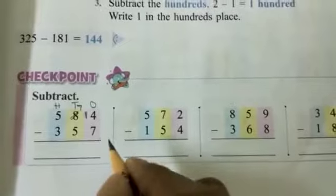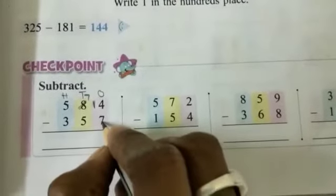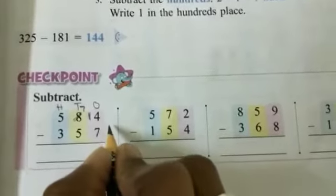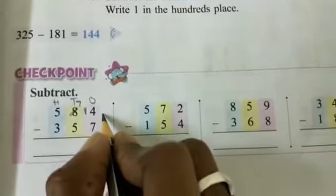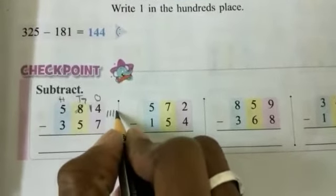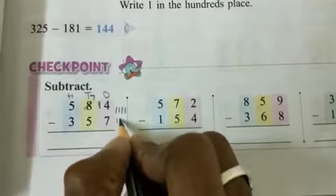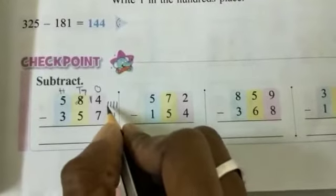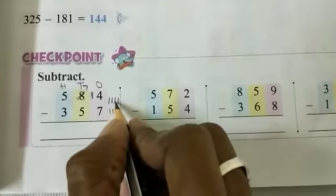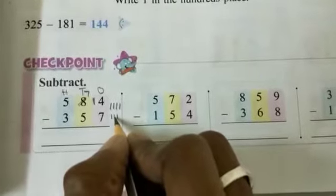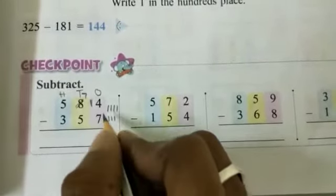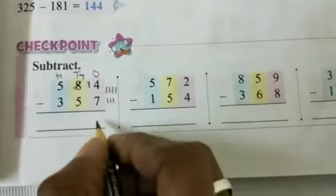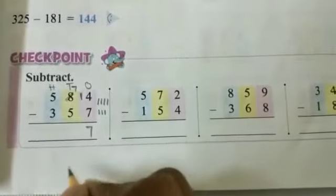What is given below? 7 is given below. So draw lines counting 7 after 8: 9, 10, 11, 12, 13, 14. Count the number of lines: 1, 2, 3, 4, 5, 6, 7. So 14 ones minus 7 ones equals 7. Write in the ones place.